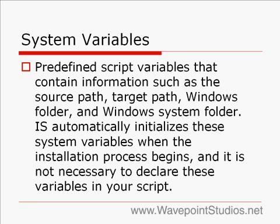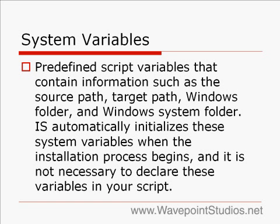We need to learn about InstallShield system variables because this is something you will encounter and use all the time. System variables are predefined script variables that contain information such as the source path, target path, Windows folder, and Windows system folder. InstallShield automatically initializes these system variables when the installation process begins, and it is not necessary to declare these variables in your script.